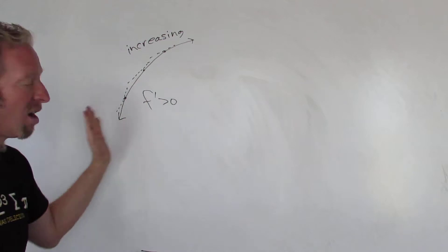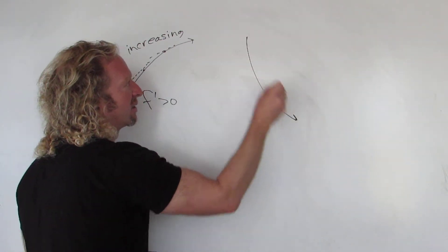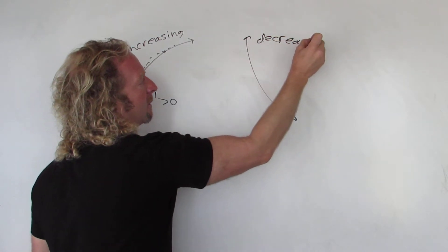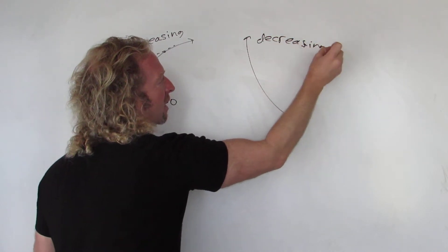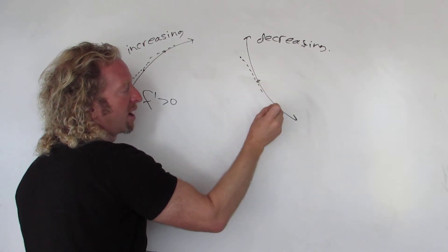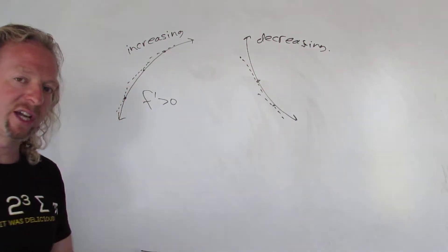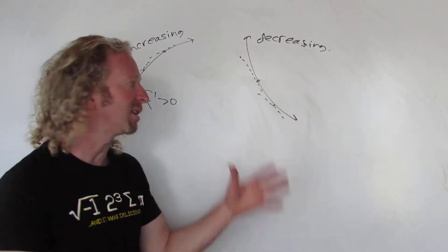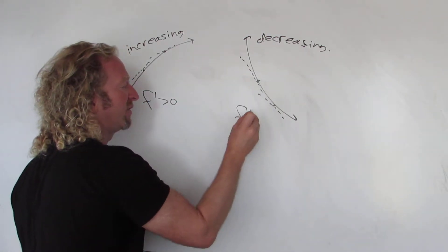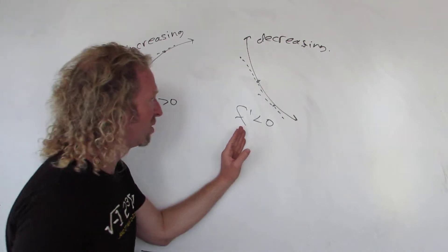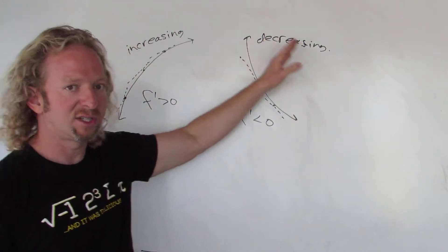This has to be true on an interval, by the way. If you have a decreasing function, it looks like this — decreasing. In this case, if you pick a tangent line at any point on this graph, you'll see the tangent line has a negative slope. The derivative is the slope of the tangent line, so the first derivative is negative. If you have a negative first derivative on an interval, the function is decreasing.